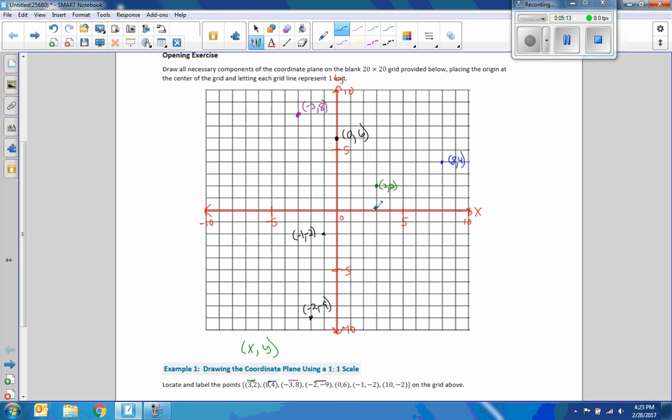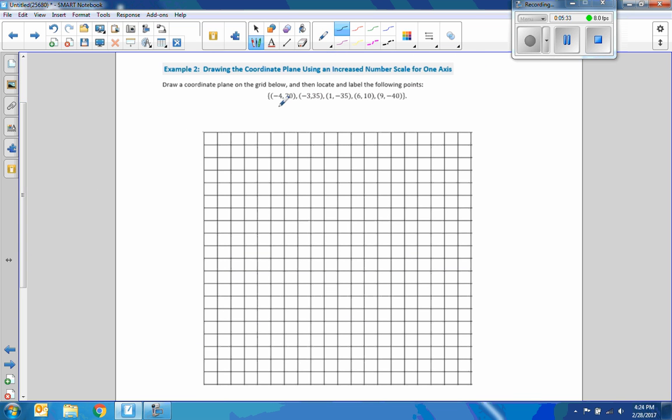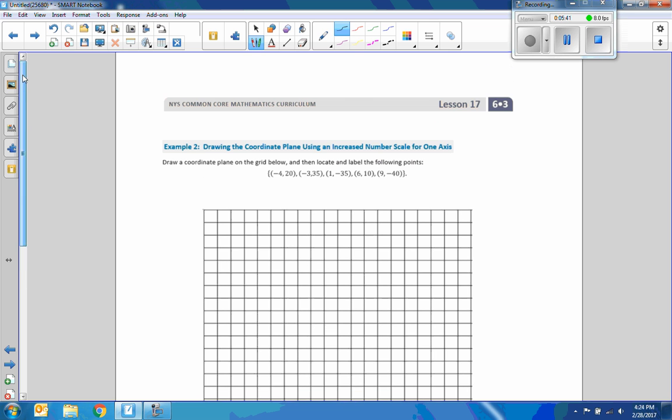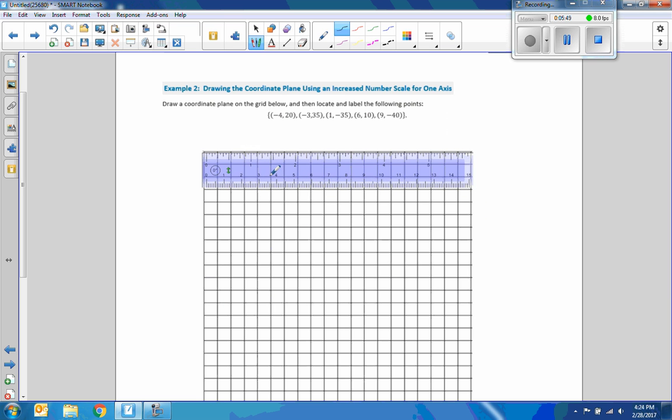And then finally, 10, negative 2 is a positive 10. Always put parentheses around your ordered pairs. Sorry, multiple coordinates. And that's how you graph and label. Example 2 says to draw a coordinate plane on the grid below and then locate and label the following points. This is just repeated. So let's go through it again. For those of you who want to see this example again, I'll do it one more time.